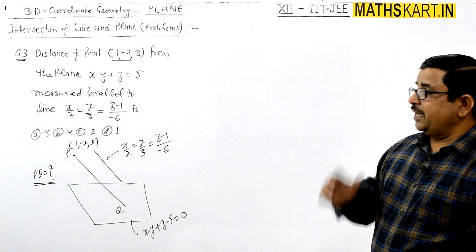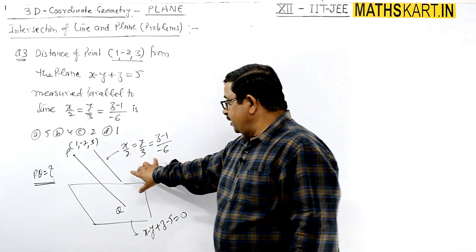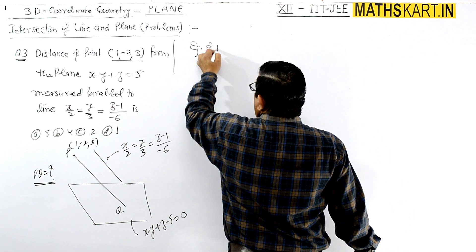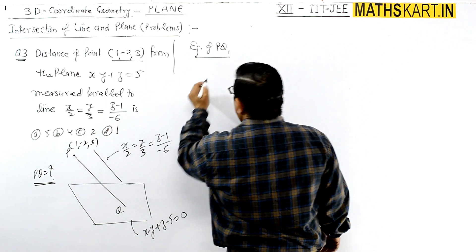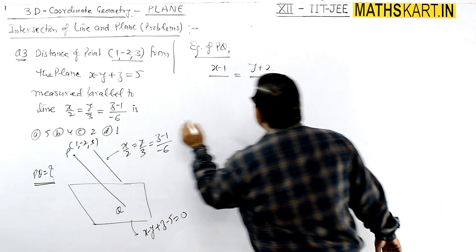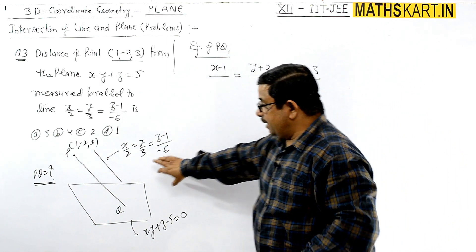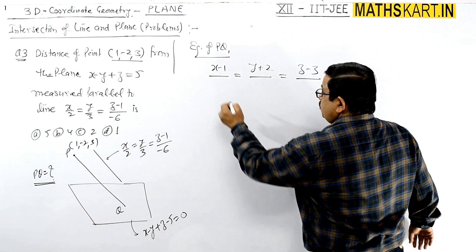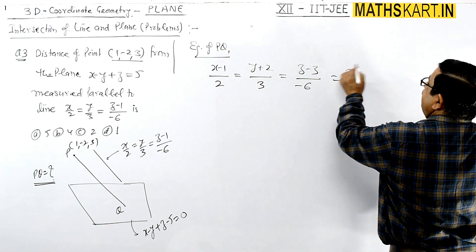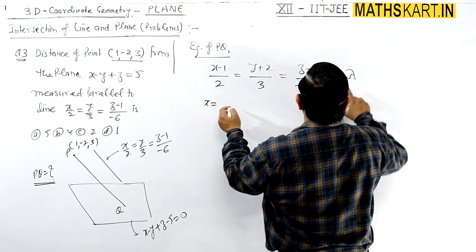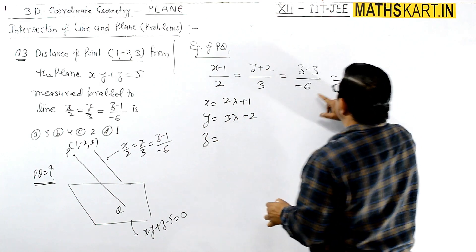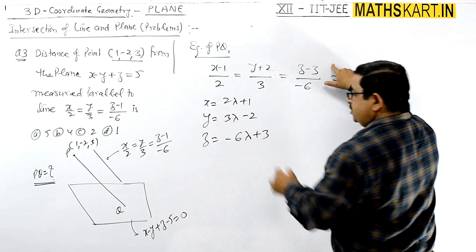We form the equation of line PQ through P(1, -2, 3) with direction ratios copied from the given line (2, 3, -6). The equation is (x-1)/2 = (y+2)/3 = (z-3)/(-6) = λ, giving x = 2λ + 1, y = 3λ - 2, z = -6λ + 3.